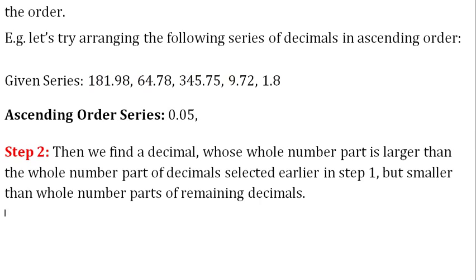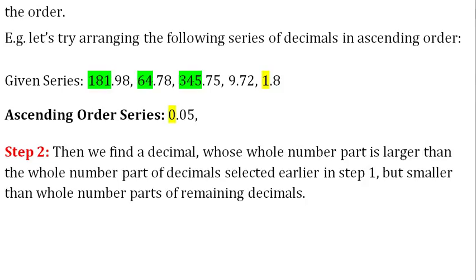Step 2: Then we find a decimal whose whole number part is larger than the whole number part of the decimal selected earlier in Step 1, but smaller than the whole number part of the remaining decimals. We get 1 as the whole number part of decimal 1.8. It is larger than 0 (the whole number part of 0.05) but smaller than the whole number part of the remaining decimals. So 1.8 is written next, giving series: 0.05, 1.8.